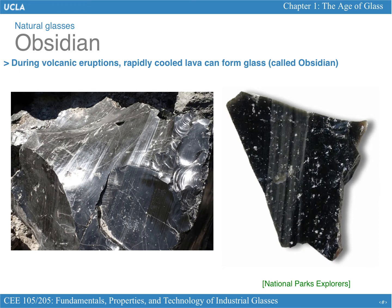Another example of natural glasses is obsidian — this is what they call 'dragon glass' in Game of Thrones. These glasses are formed during volcanic eruptions. During the eruption, magma and lava are formed, and once this lava cools down — for example, if it ends up in the ocean — it can form a glass. When the lava cools down and freezes into a solid, it can form this type of glass, which is obsidian.